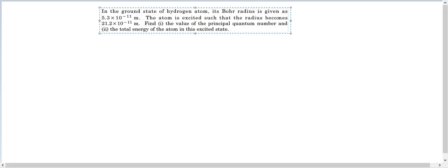Hello everyone, my name is Priyanka and I welcome you all to my session. The question is already posted on the board, so let's go for it. In the ground state of hydrogen atom, its Bohr radius is given as 5.3 × 10^-11 meters. The atom is excited such that the radius becomes 21.2 × 10^-11 meters. Find the value of the principal quantum number and second, the total energy of the atom in this excited state.